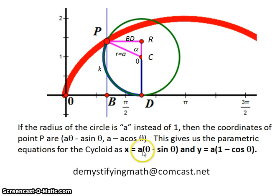So we have x-coordinate a times theta minus sine theta, which gives us our x-parametric equation for a cycloid in general. And y equals a times 1 minus cosine theta for our y-coordinate or our y-equation for the parametric equations.